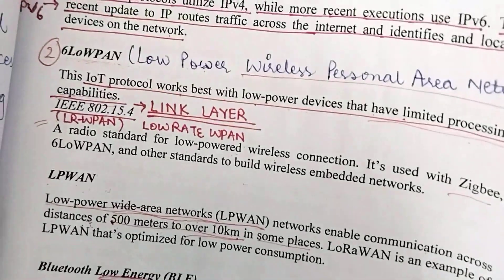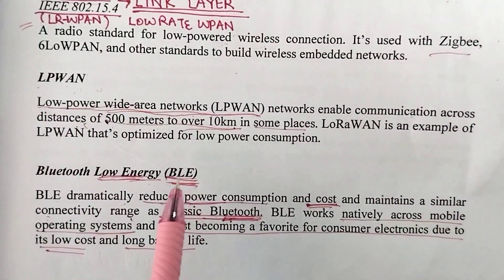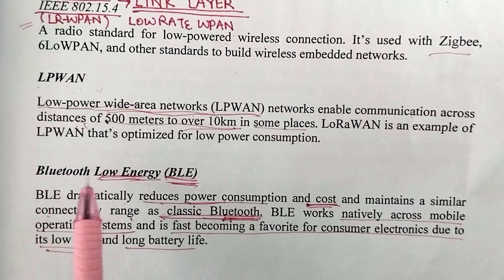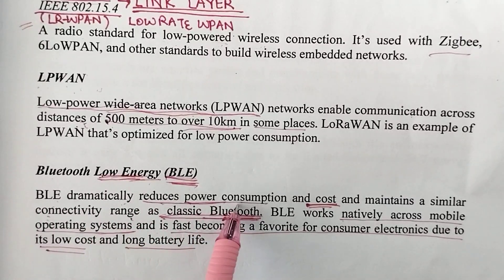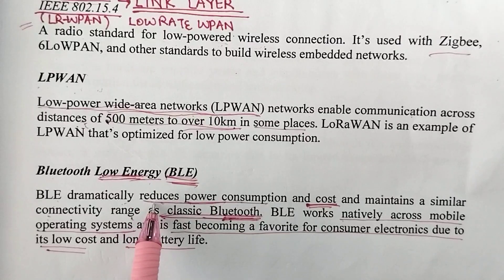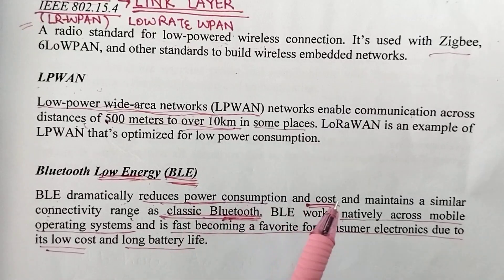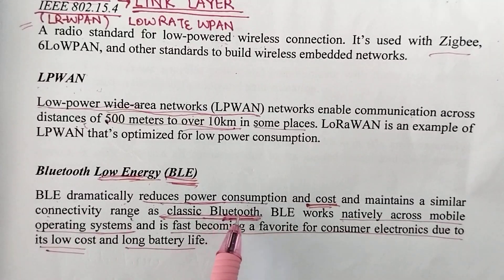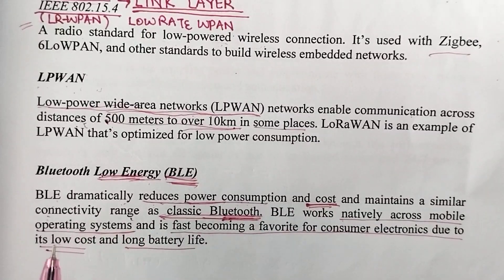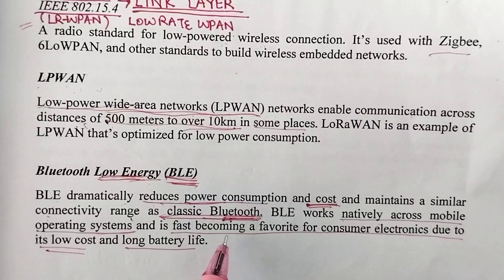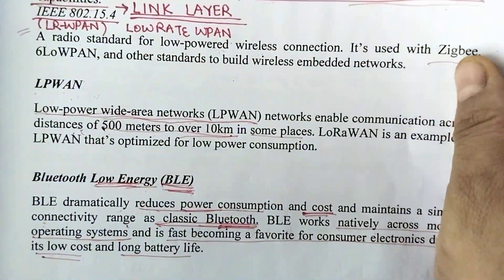Another standard with which LRWPAN is embedded is Bluetooth Low Energy, also known as BLE. Bluetooth Low Energy dramatically reduces power consumption — that is why it is called Low Energy — and it also reduces cost. It maintains a similar connectivity range to classic Bluetooth. Though it has less power consumption and less cost, there is no effect on the connectivity range. It works natively across mobile operating systems and is fast becoming a favorite for consumer electronics because of its low cost and long battery life.